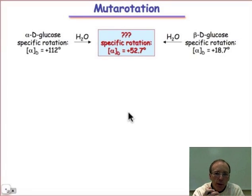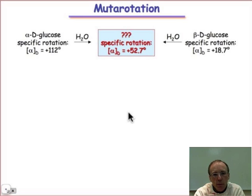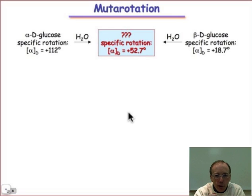Over the next four webcasts, we're going to take a look at some of the most important reactions of monosaccharides. We'll begin with the process of mutarotation, which is an inversion of configuration of the hydroxyl group at the anomeric position. So the α form can interconvert to the β and vice versa.